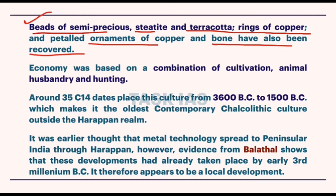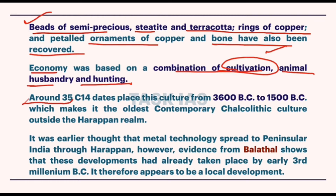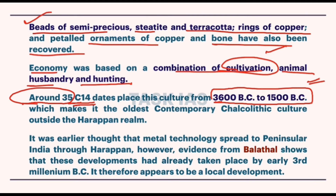These terracotta figurines and beads are similar to features you have studied in GS about Harappan culture. Since both sites belong to the same period, some similarities are expected — you can connect these points. The economy was based on a combination of cultivation, animal husbandry, and hunting. Rajasthan's fertile land, particularly near rivers like the Ghaggar, provided ground for flourishing civilizations. Around 35 sites have been excavated, dated by Carbon-14, with an approximate age of 3600 BC to 1500 BC.